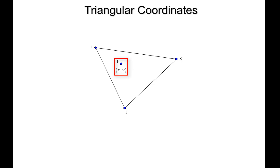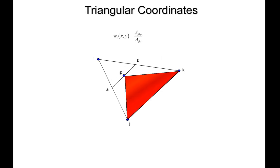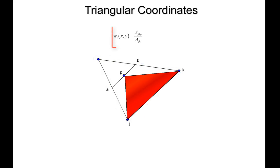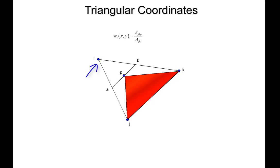The easiest way to think about triangular coordinates is as the ratio of two triangles. You draw a triangle between points j, k, and p — the red triangle — and the ratio of the red triangle to the full element triangle gives the value of w sub i. When p lies on the line joining j and k, w sub i equals zero because that triangle has zero area. When p moves to point i, w sub i equals one because the two triangles become the same.